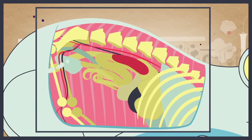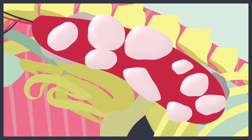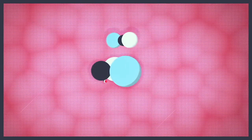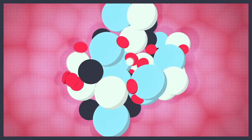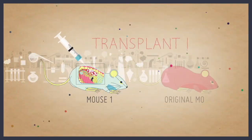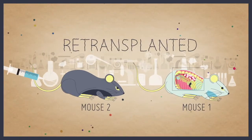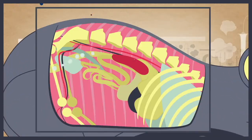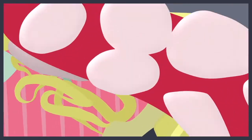rare and specialized cells could travel to the spleen where they would divide and form small colonies. These colonies contained a mixture of different blood cell types. Incredibly, when these colonies were removed and re-transplanted, these rare cells formed new colonies in the spleen of a second mouse.